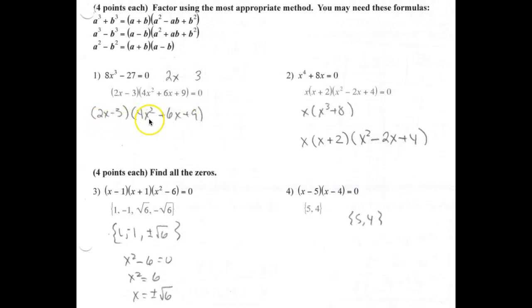2x minus 3. When I square a, I'm going to get 4x². When I multiply a times b, I'm going to get 6x. And when I square b, I'm going to get 9. So this is your final answer.